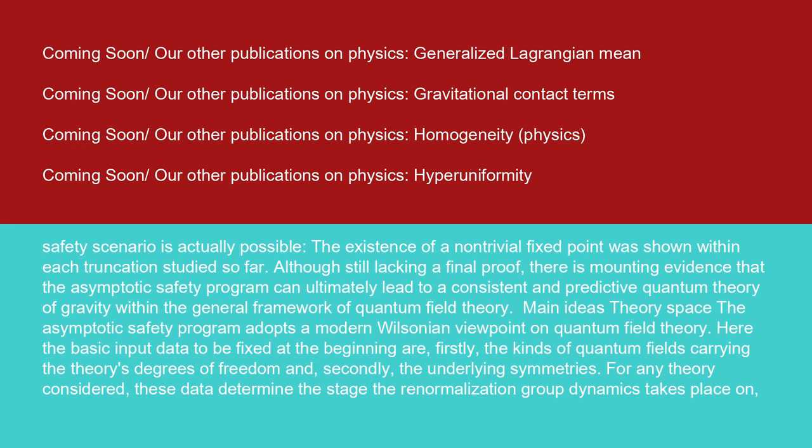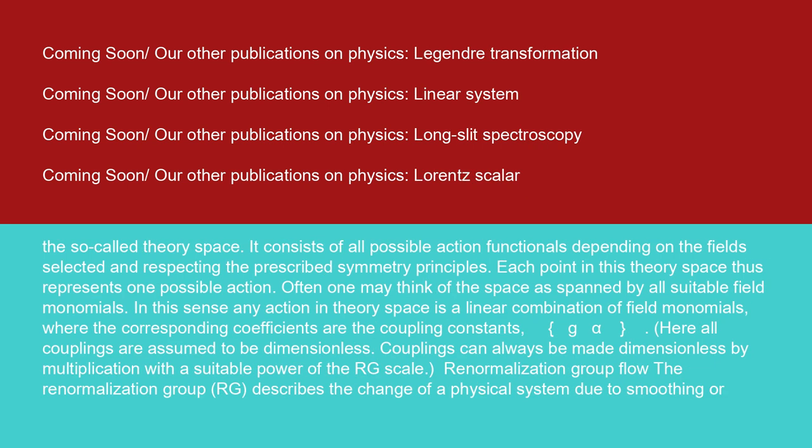Main ideas: theory space. The asymptotic safety program adopts a modern Wilsonian viewpoint on quantum field theory. Here, the basic input data to be fixed at the beginning are firstly, the kinds of quantum fields carrying the theory's degrees of freedom, and secondly, the underlying symmetries. For any theory considered, these data determine the stage the renormalization group dynamics takes place on, the so-called theory space. It consists of all possible action functionals depending on the field selected and respecting the prescribed symmetry principles. Each point in this theory space thus represents one possible action. Often one may think of the space as spanned by all suitable field monomials. In this sense, any action in theory space is a linear combination of field monomials, where the corresponding coefficients are the coupling constants G_α. Here, all couplings are assumed to be dimensionless. Couplings can always be made dimensionless by multiplication with a suitable power of the RG scale.